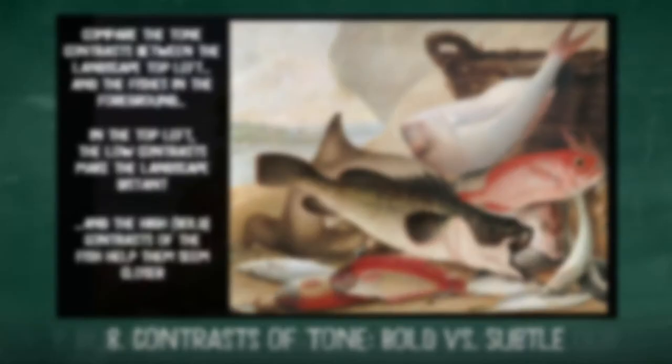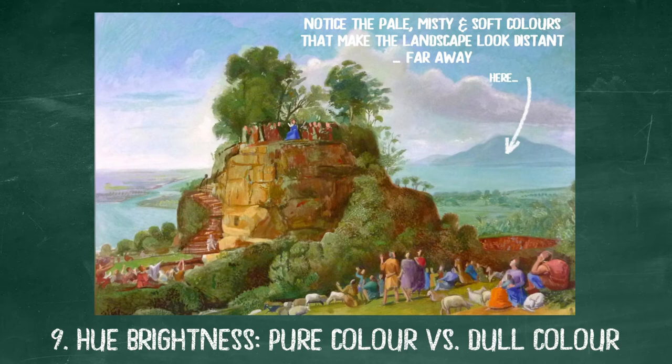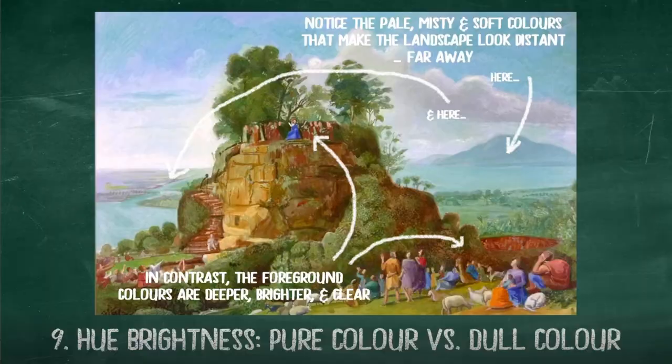Lastly, colors will seem brighter the closer they are in the scene. Like tone, color softens in the distance. So when drawing or painting, make your colors bolder and brighter in the foreground.